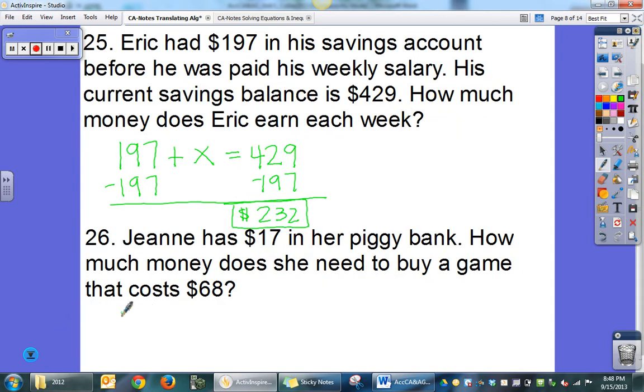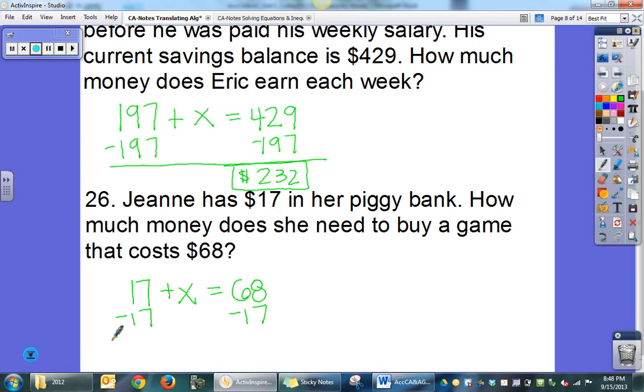Jean has $17 in her piggy bank. How much money does she need to buy a game that costs $68? So again, she has $17. We don't know how much more she needs, but total she needs $68. So if I subtract $17 from both sides, X is going to give me $51.